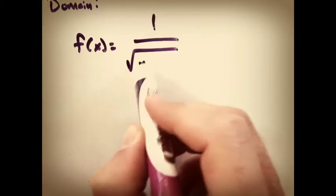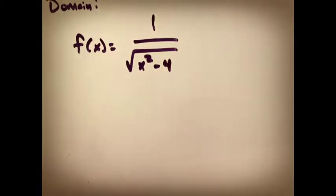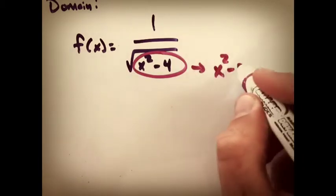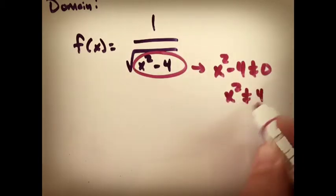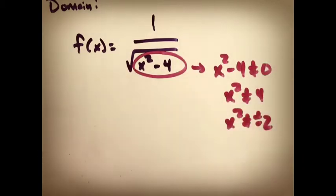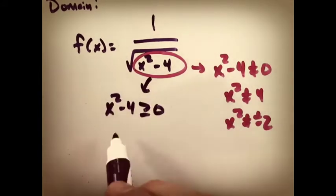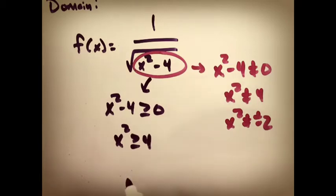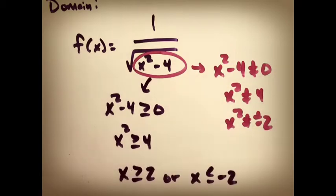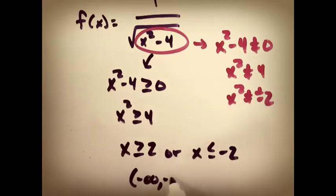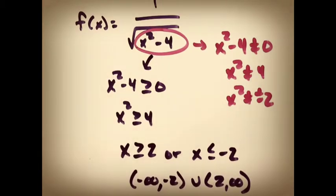Then we go to some domain problems. Remember, domain is what X can be. Really, focus on what X can't be. I look at this problem. I got X's in the bottom, so that bottom can't become 0. But I also have X squared minus 4 under a square root. That thing can't ever be negative, so set it greater than or equal to 0. And look and see what you end up with when you compare your two answers. Look at that. I gave you the answer.